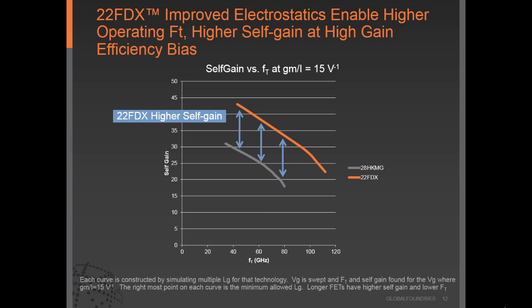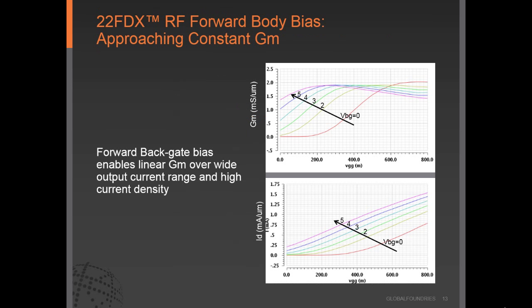We've talked about the benefits FDSOI brings for the digital portion of the technology. Now let's talk about the benefits 22FDX brings for analog applications as well. 22FDX transistors, being a fully depleted transistor, have improved electrostatics and can enable a higher operating Ft and higher self-gain at a high gain-efficiency bias. This is because 22FDX is a fully depleted device with very good electrostatic control, higher transconductance, mobility, and lower output conductance than a bulk technology today.